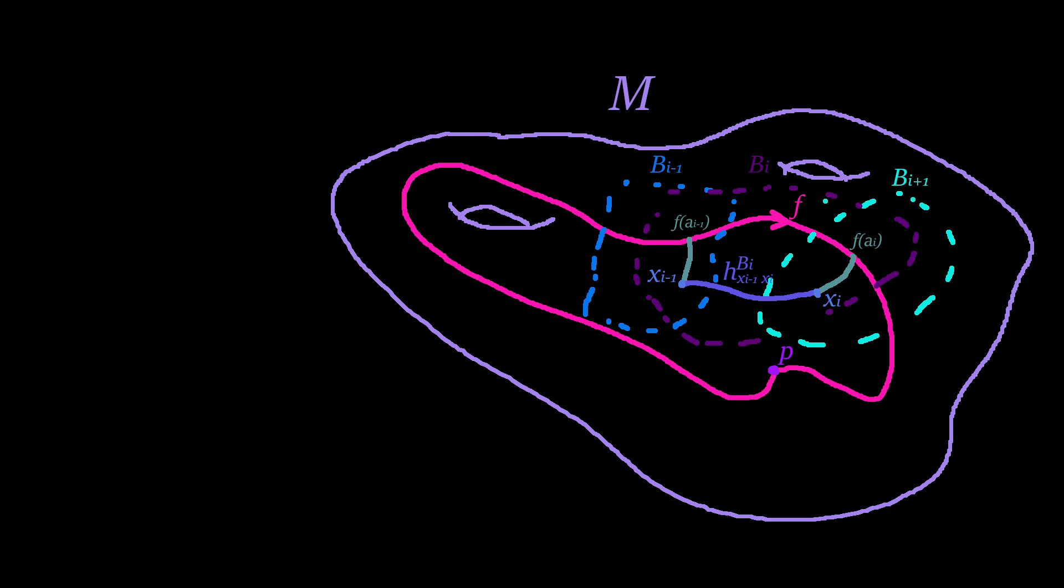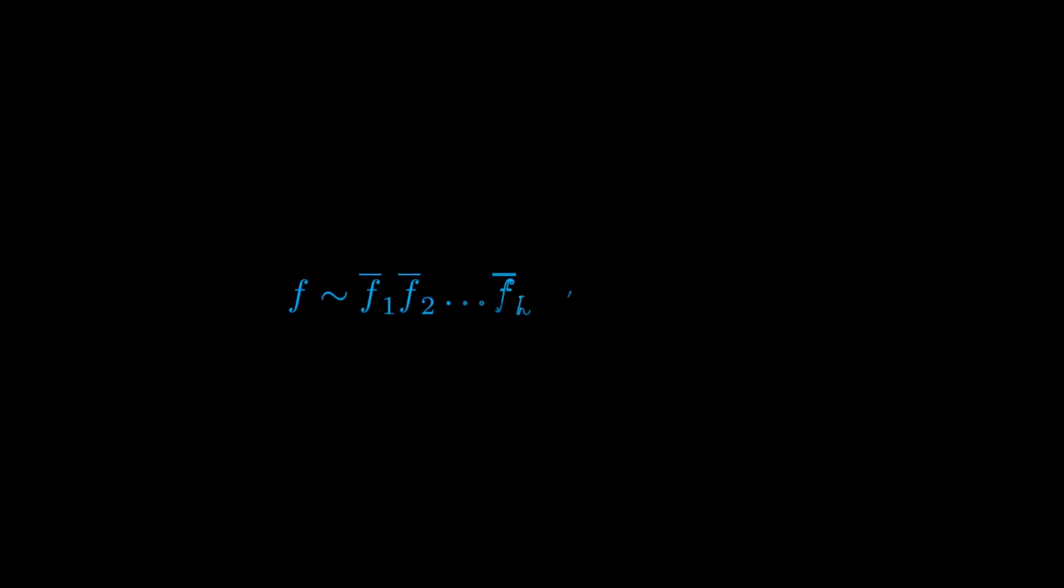We have thus just shown that F is path homotopic to a special loop. This is because it can be expressed as a finite product of paths of the form H_B(x,x'), and thus the fundamental group of a topological manifold is countable. With this said, I thank you for watching the video and hope that it was helpful.